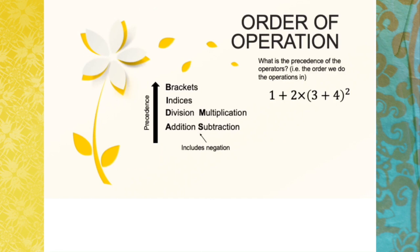In the order of operations, we have brackets first, followed by indices or powers, and then division and multiplication. Since division and multiplication are of the same level, if they both appear in an expression, we evaluate them from left to right. The same rule applies to addition and subtraction.